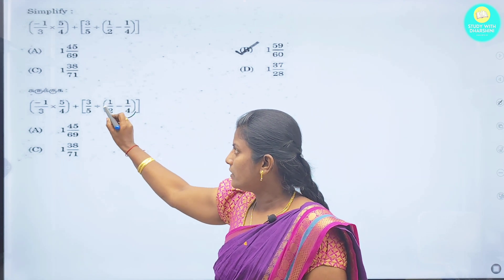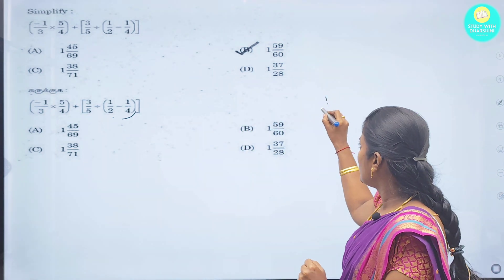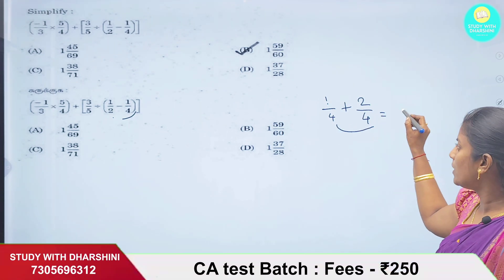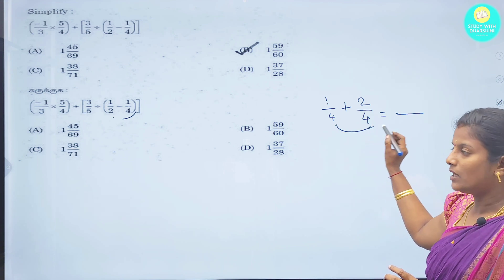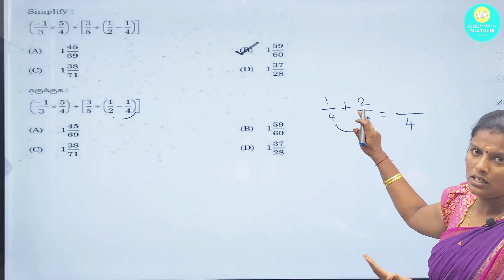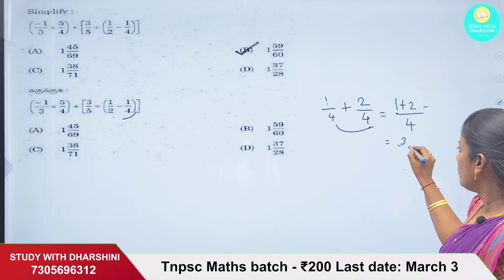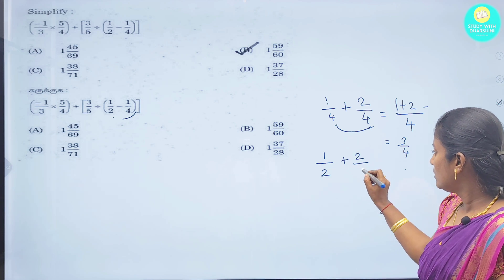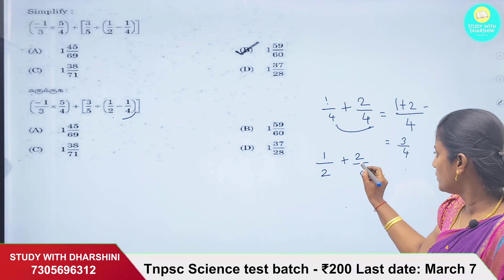First, the brackets are solved. The fractions are solved. Let's see how we solve the denominator. When we solve the denominator, we can solve the same denominator. If it is the same, we can add or subtract the fraction. Now the two denominators are the same — the 4 is the same. In the numerator, we can add or subtract. So 1 plus 2 is 3 by 4.